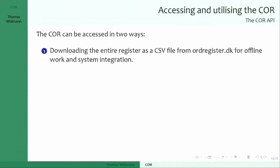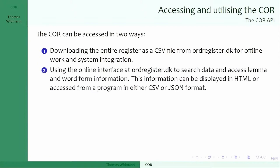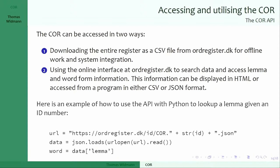This will of course be publicly available and will make searching much easier. You can download the entire register as a CSV file from orgis.co — we should probably use an English name, it's hard to say in the middle of an English sentence. You can also use it online via a search interface, or access it programmatically in CSV or JSON format. For instance, in Python, if you have an ID number you can query it directly and find out the word — so if 'id' is the number for 'donut' that we saw before, you can retrieve it like that.